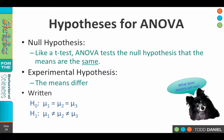Our hypotheses are similar to those we've used for t-tests. Like a t-test, the ANOVA tests the null hypothesis that the means of each group are the same, while the experimental hypothesis is that the means are different. In its simplest form, we write the null hypothesis as H₀: μ₁ = μ₂ = μ₃, and the alternative hypothesis as μ₁ ≠ μ₂ ≠ μ₃.